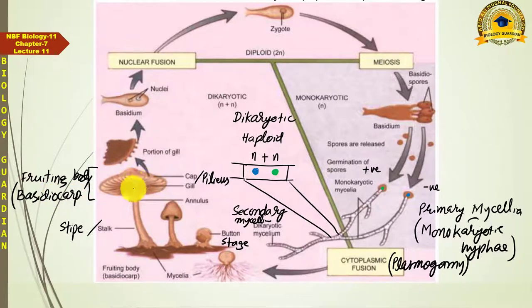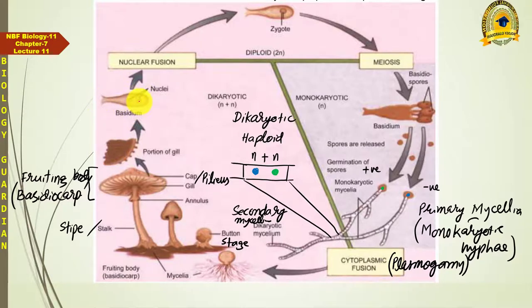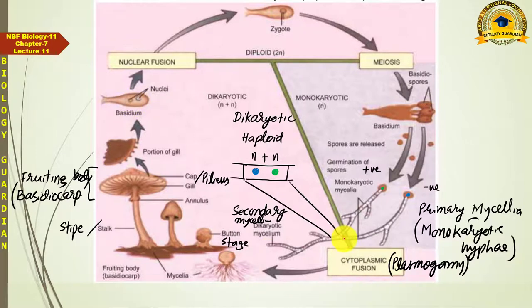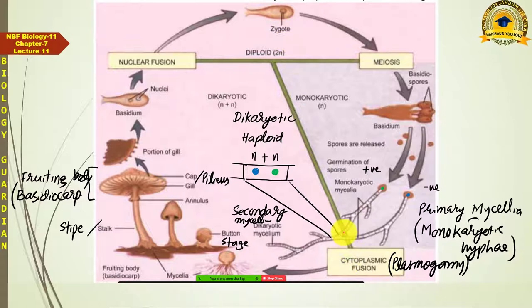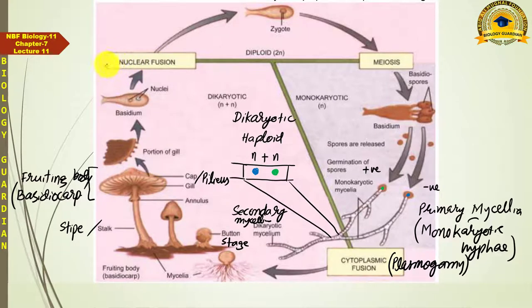Inside the basidiocarp, on the margins of the gills on its lower surface, thick rod-shaped structures develop — called basidia. Basidium is a single-cell structure and inside this cell, two genetically different nuclei are still present. The fertilization process that had started earlier was not complete — only plasmogamy had occurred and karyogamy had been delayed. Now karyogamy occurs at this stage — nuclear fusion takes place.